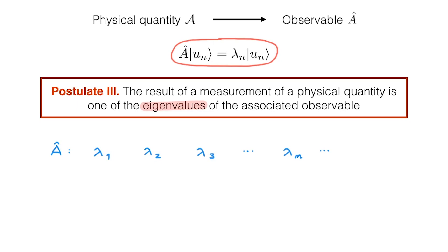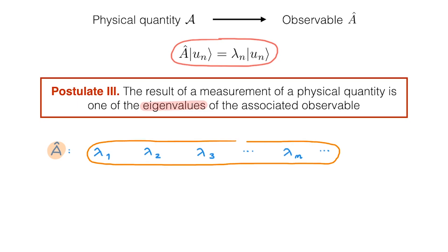Postulate 3 tells us that whatever state our system is in, when we measure A, we can only get one of these eigenvalues as the outcome of the measurement. So the operator A encodes all the possible outcomes of the measurement irrespective of what the state of the system is.